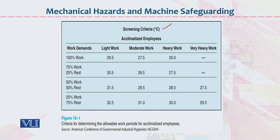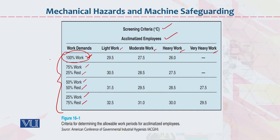Screening criteria for acclimatized employees: 100% work — light work, moderate work, heavy work, very heavy work; 75% work / 25% rest; 50% work / 50% rest; 25% work / 75% rest. Yeh mukhtalif compositions hain kaam ki. Yehaan pe jo ideal situations hain, yeh top management decide karegi — kya humne kaun si factors pe move karna hai. Baaz auqaat organization yehaan pe working conditions use karti hai. Moderate work pe employee ke physical injury hone ke chances bahut kam ho jate hain.